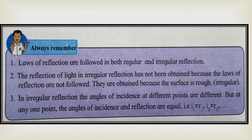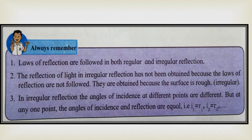Always remember: the laws of reflection are followed in both regular and irregular reflection. In irregular reflection, scattered reflection occurs not because the laws are broken, but because the surface is rough and the angles of incidence differ at different points. However, at any one point, the angle of incidence equals the angle of reflection: i1 = r1 and i2 = r2.